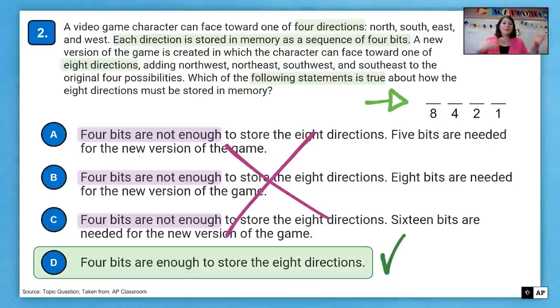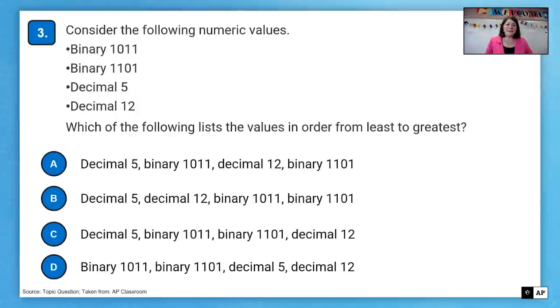So jot down, remember your binary numbers there and how many bits can store things. And you should be able to come up with it. Yes, four bits are enough. More about binary now on question three. Consider the following numeric values. So we have two binary and two decimal. Which of the following lists the values in order from least to greatest?